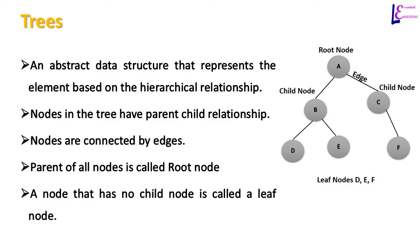Diagrammatically, a parent node is represented on top while its child nodes are connected with edges or lines below it. The first node from which the tree starts is called the root node, whereas the last node which does not have any child node is called a leaf node. In the figure to the right, A is the root node, B and C are its child nodes and left and right subtrees as well. Subtree B has left child D and right child E, and C has only one right child F. Since D, E, and F have no child nodes, they are called leaf nodes.